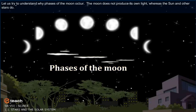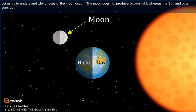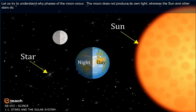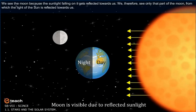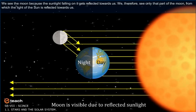Let us try to understand why phases of the moon occur. The moon does not produce its own light, whereas the sun and other stars do. We see the moon because the sunlight falling on it gets reflected towards us. We, therefore, see only that part of the moon from which the light of the sun is reflected towards us.